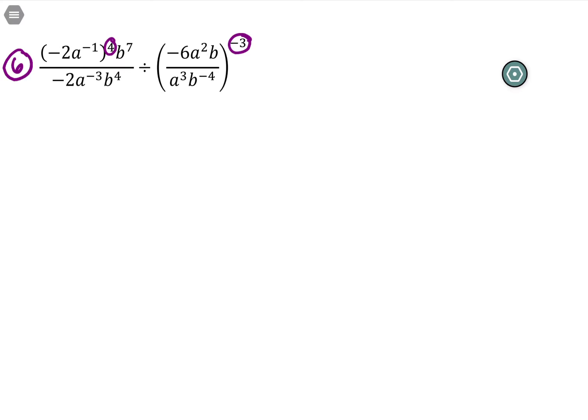We're going to raise -2 to the fourth power first, and because a negative is inside the parentheses, it's really part of this, so we do get positive 16. a to the -1 to the fourth is the same as a to the -4.